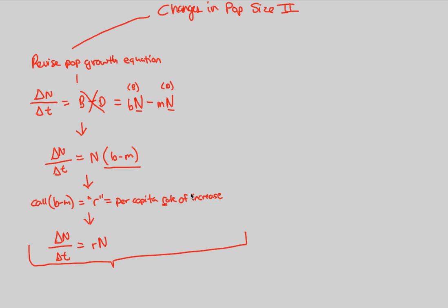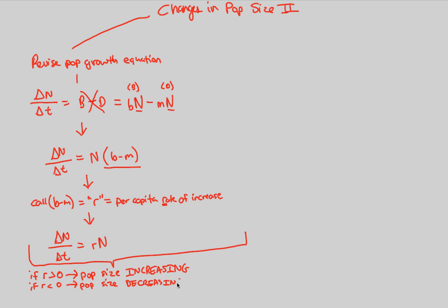You need to understand these rules based on basic mathematics. If r is greater than zero — say r equals 1, 2, 3, or 4 — the population size is increasing. For example, if N equals 1,000 and r equals 2, the population is of course increasing. If r is less than zero, the population size is decreasing. These are facts to memorize; the equation above makes sense when you plug in numbers.